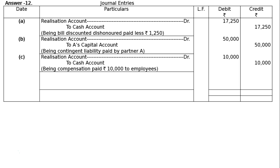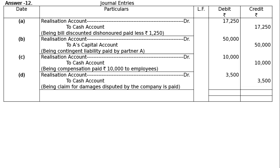Part D: Rs 5,000 for damages claimed by a customer was disputed by the firm. It was settled at 70% by a compromise between the customer and the firm. The amount payable is Rs 5,000 multiplied by 70% = Rs 3,500. Journal entry: Realization Account debited and Cash Account credited for Rs 3,500, being the claim for damages disputed by the firm now paid.